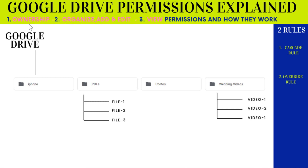The first is ownership, which is the highest level, and only the owner of the file has this permission. Although you can transfer the ownership to some other person, I will show you why and how. The second level is edit permission — organize, add, and edit — so all kinds of activities can be done. If someone has this permission, they will not be the owner unless you assign ownership. The third and lowest level of permission is view-only permission.